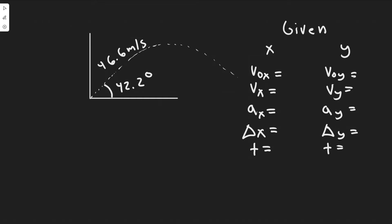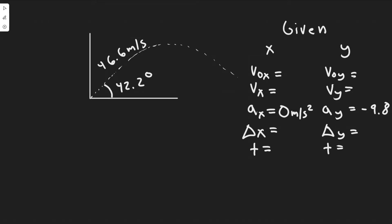The first thing to establish is what we're given. In a two-dimensional kinematic problem, the acceleration in the x-direction is zero meters per second squared unless specified otherwise. In the y-direction, it's always the acceleration due to gravity: minus 9.8 meters per second squared. We also have the initial velocity components — not given directly, but we can find them from the angle and magnitude.